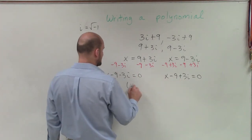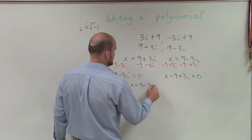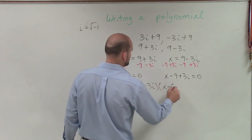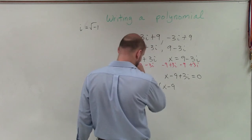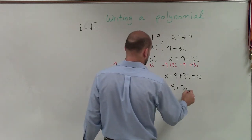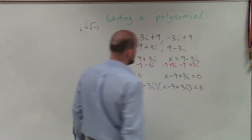So now, since I have my two factors, I can write these as a product equal to 0. OK.